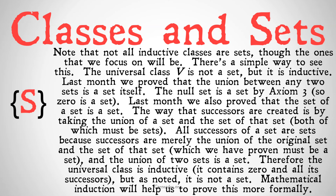Last month we proved that the union between any two sets is a set itself. The null set is a set by axiom three, so zero is a set. Last month we also proved that the set of a set is a set. The way that successors are created is by taking the union of a set and the set of that set, both of which must be sets. All successors of a set are sets, because successors are merely the union of the original set and the set of that set, which we have proven must be a set, and the union of any two sets is a set.